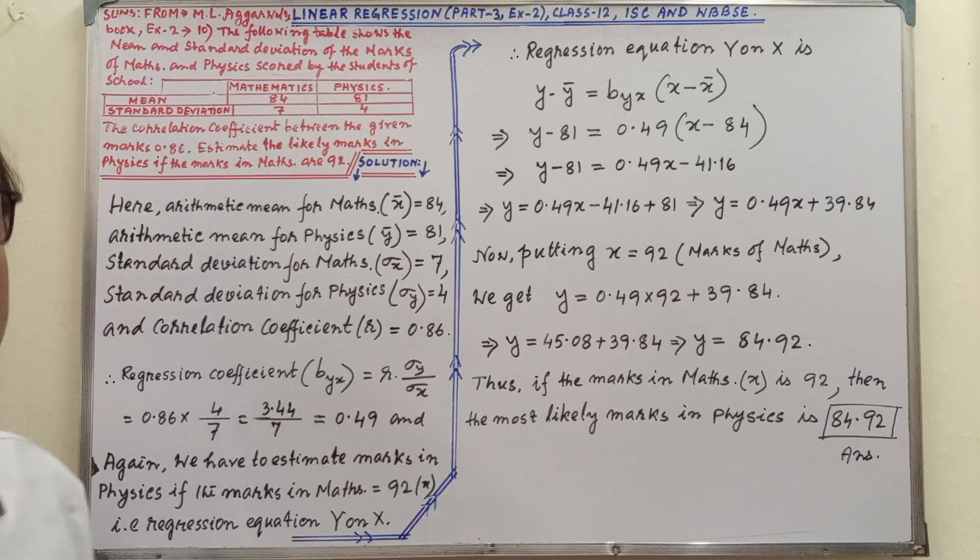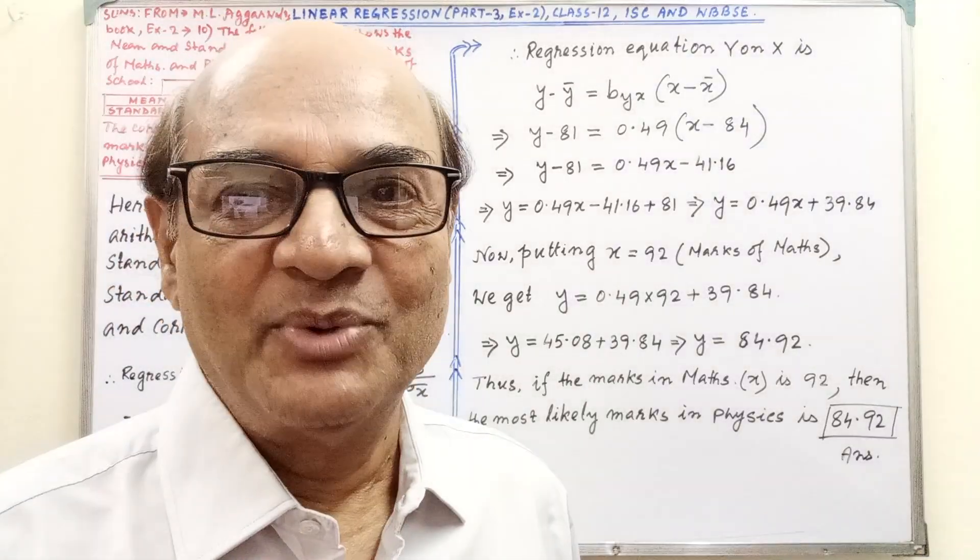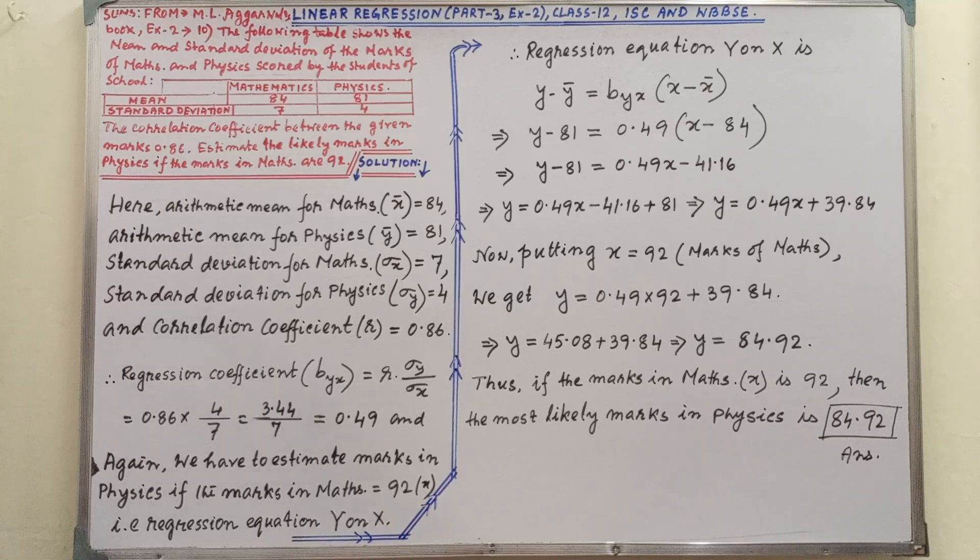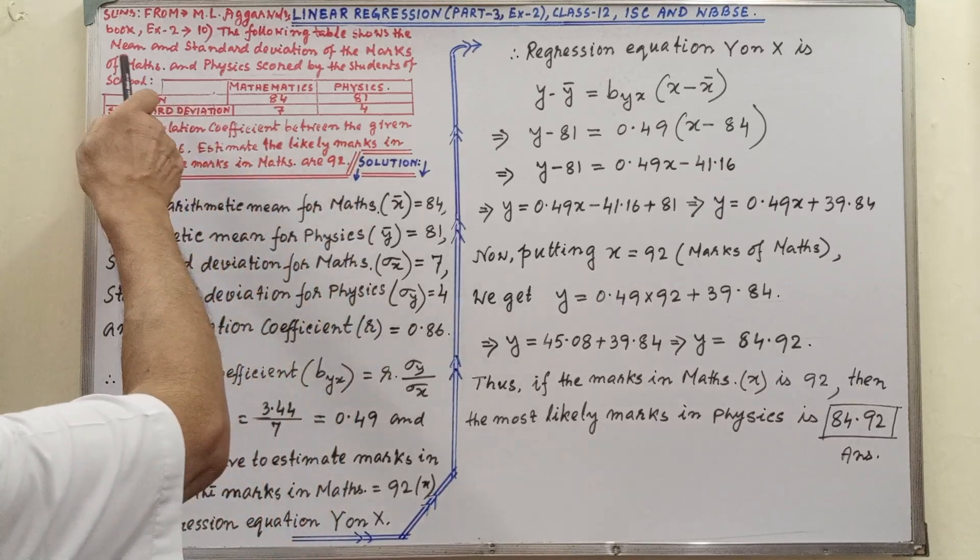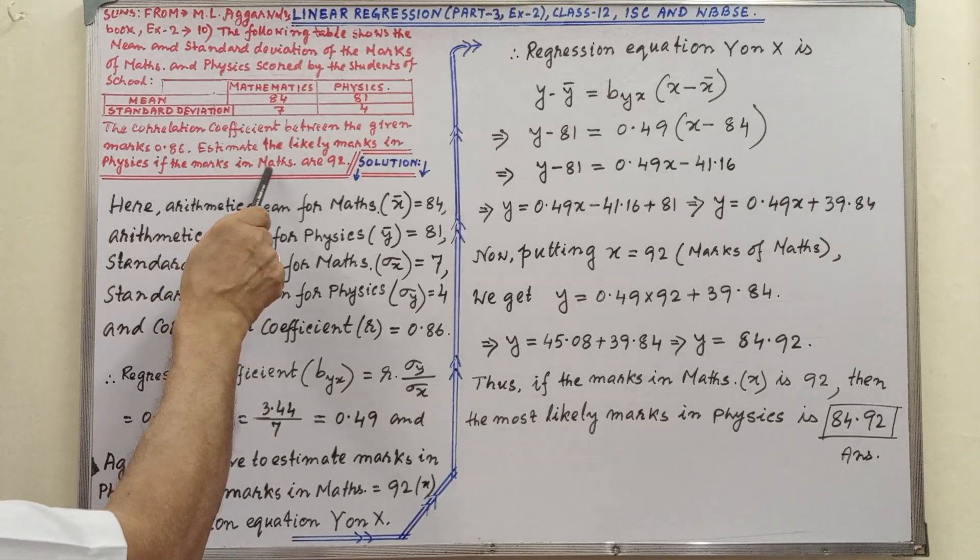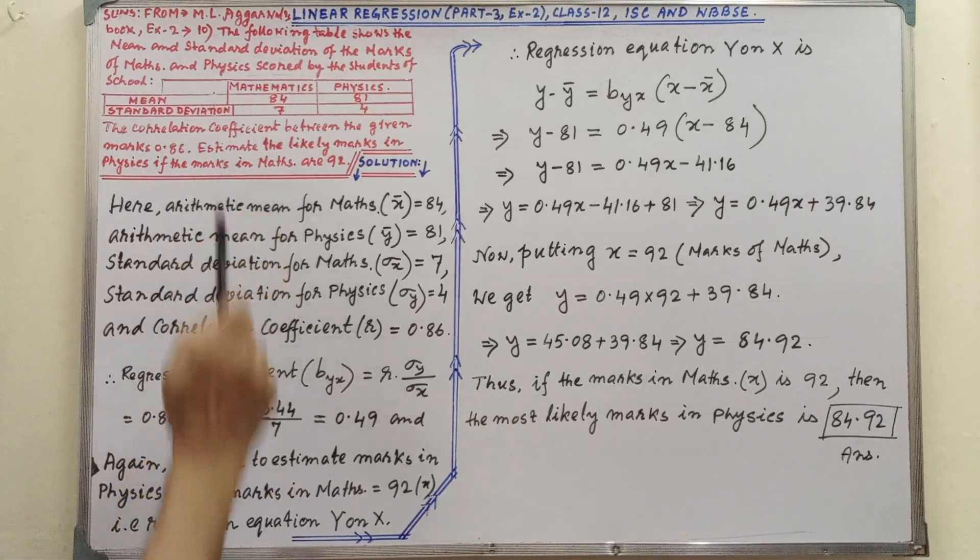Now, please pay your attention on the board. Sums given from M. Lagoval's book, exercise 2, sum number 10. The following table shows the mean and standard deviation of the marks of maths and physics. You will get this in your book and here also it is written clearly.